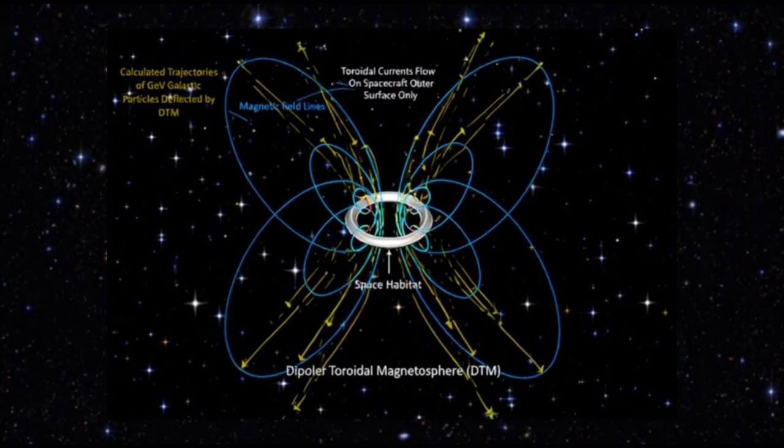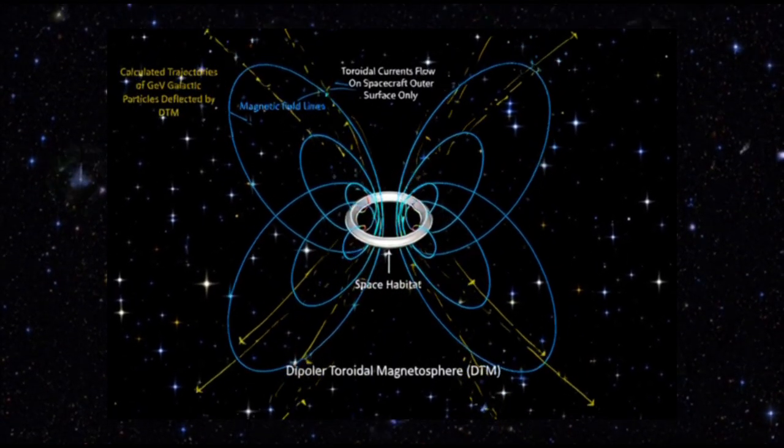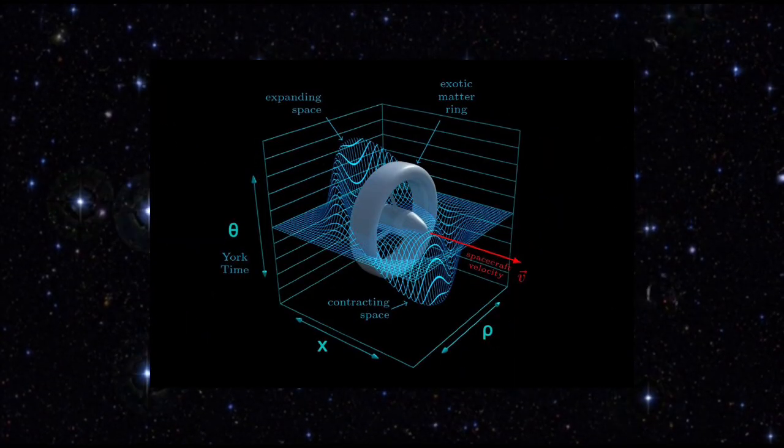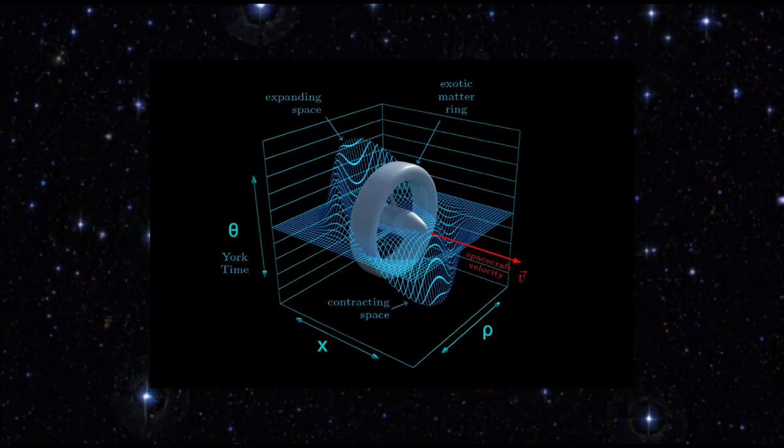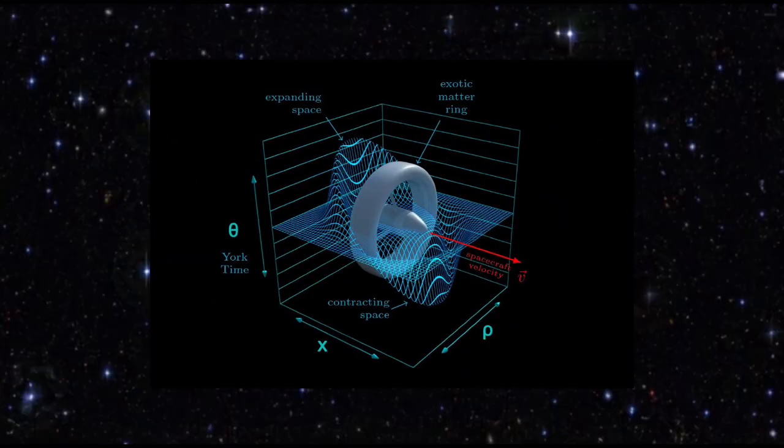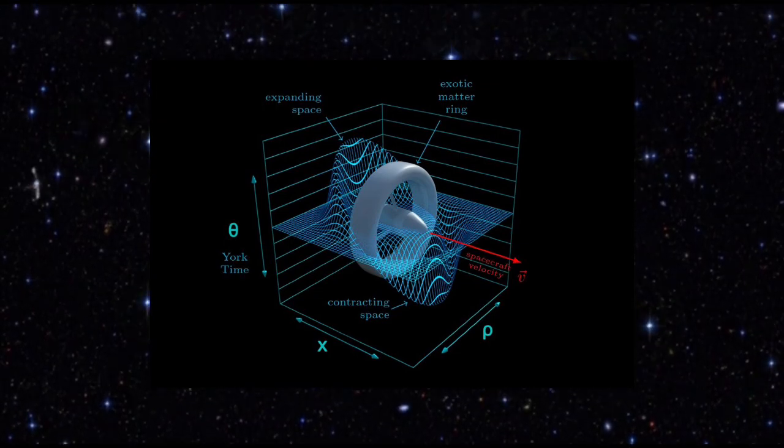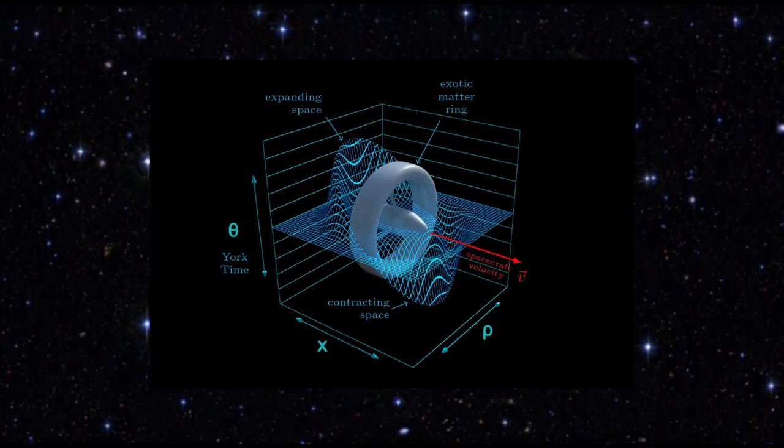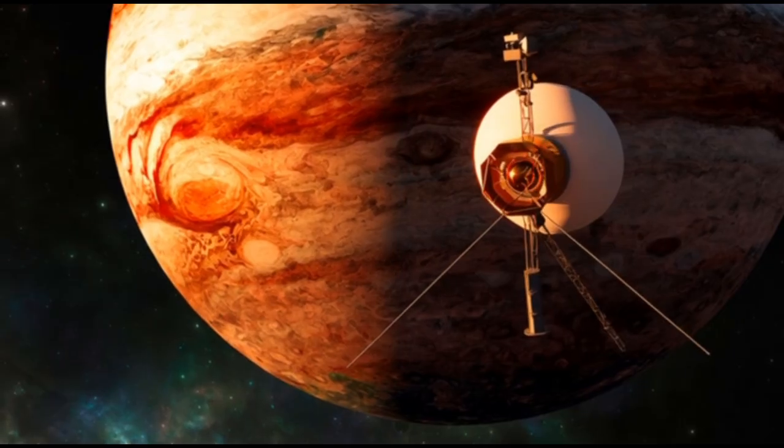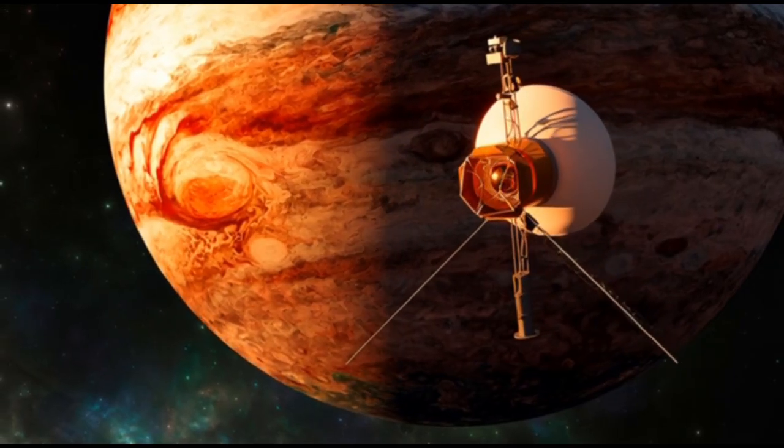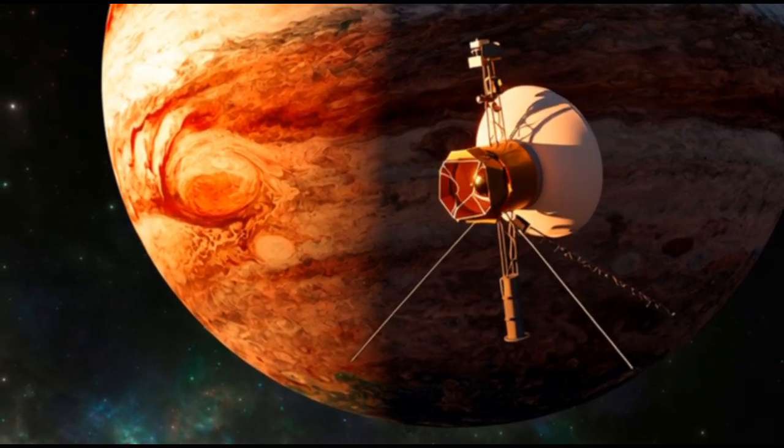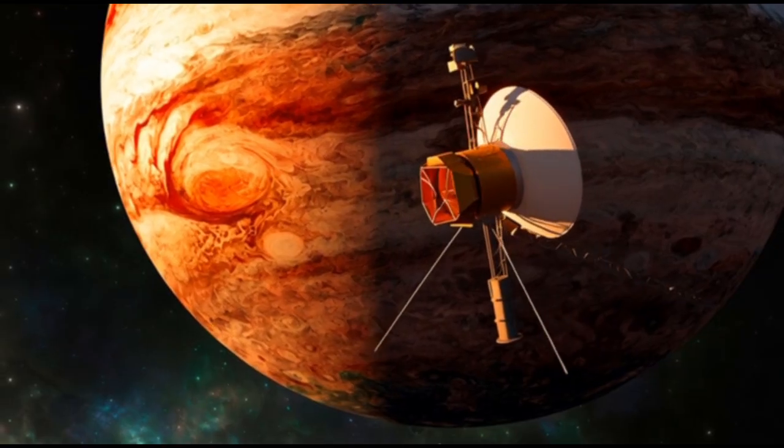The road ahead: the theoretical green light doesn't make warp drive imminent, but it does provide a research path. Reduce energy requirements: optimizing bubble geometry and stress energy distribution is key. Some simulations suggest refinements could reduce energy needs from planetary to asteroid scale levels, still immense but less absurd.